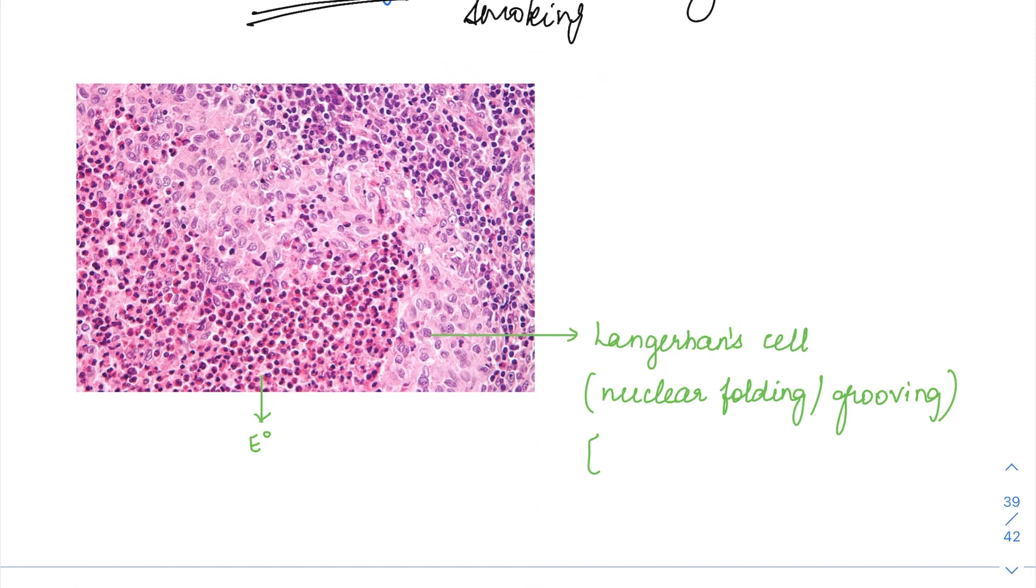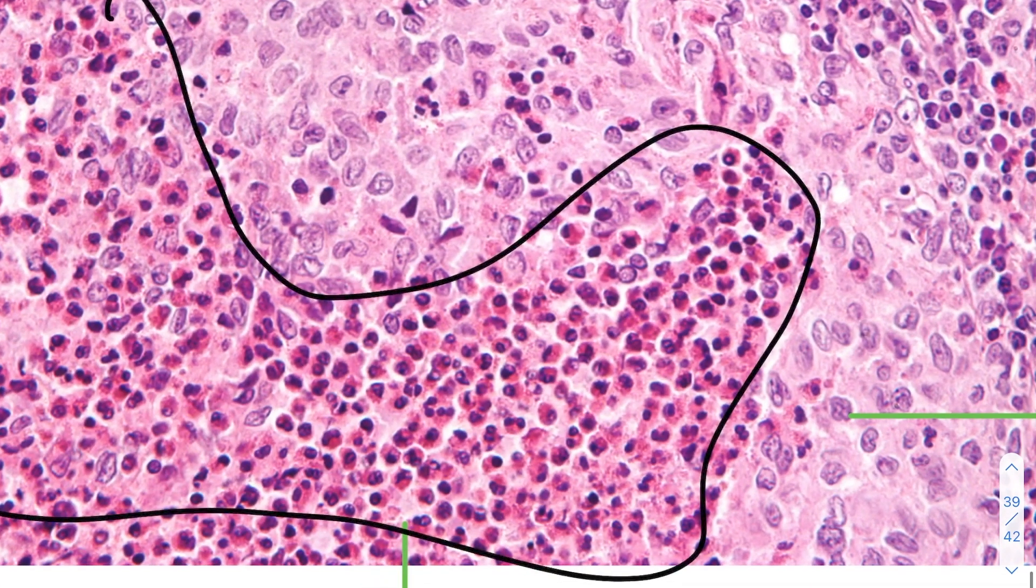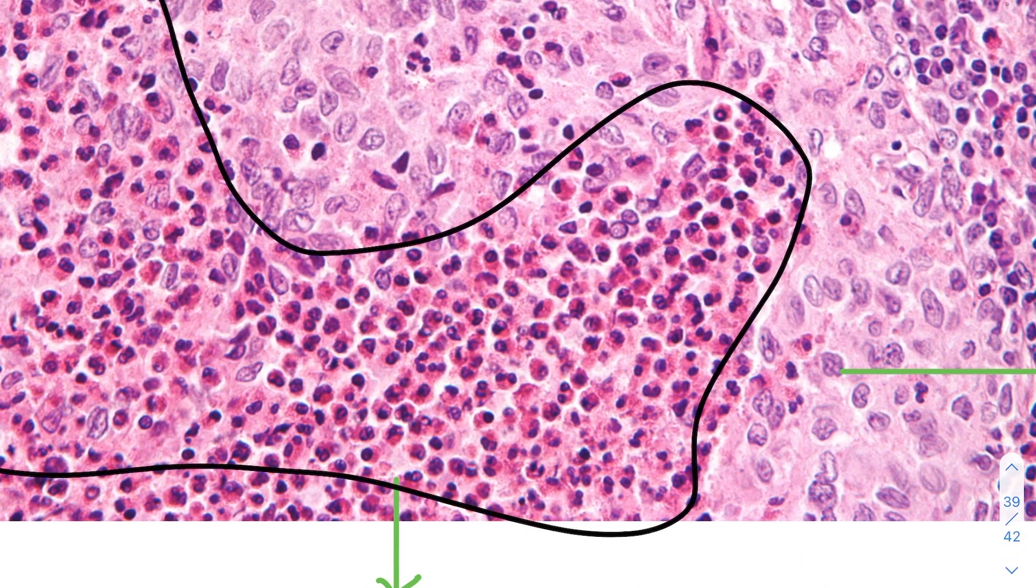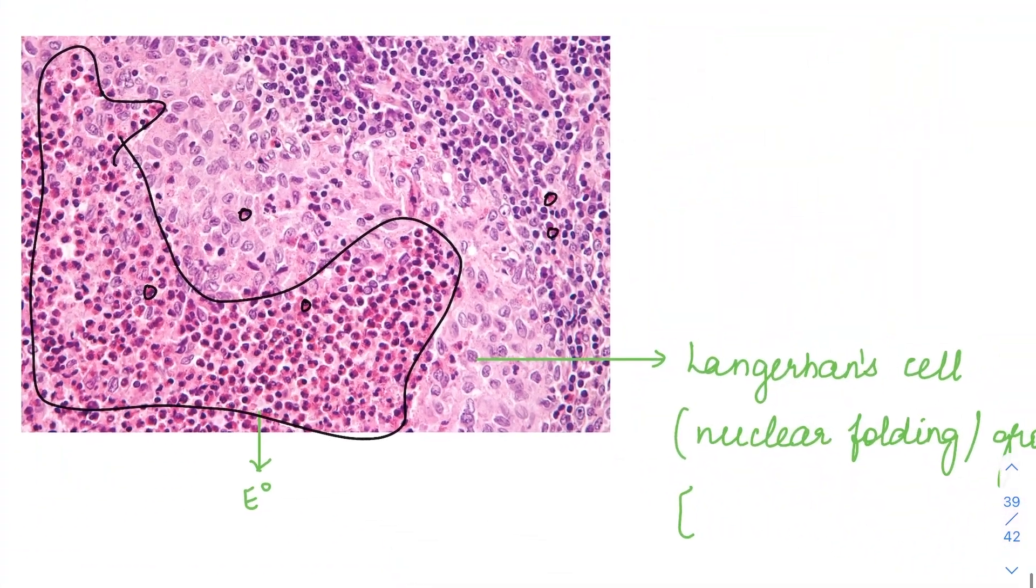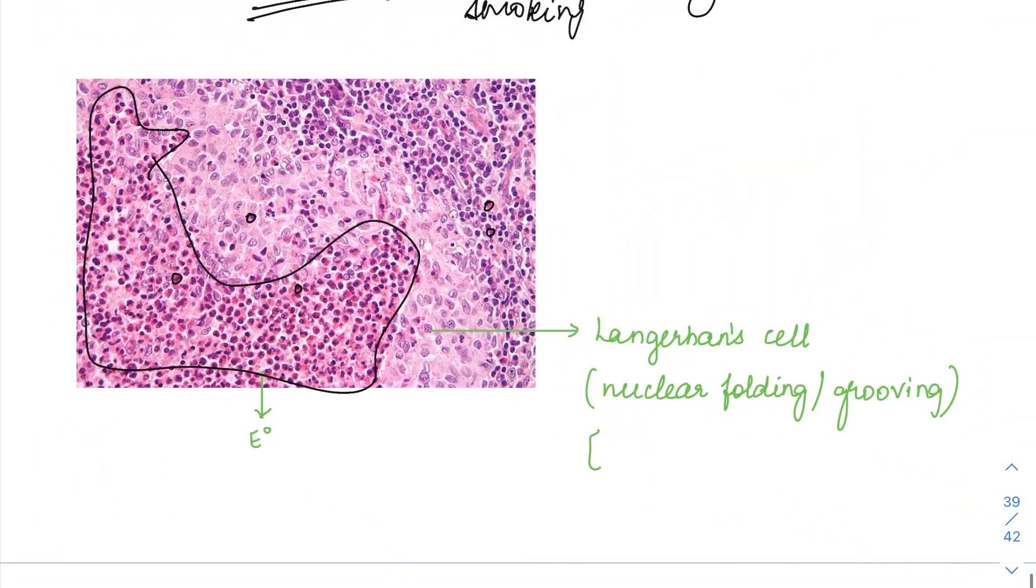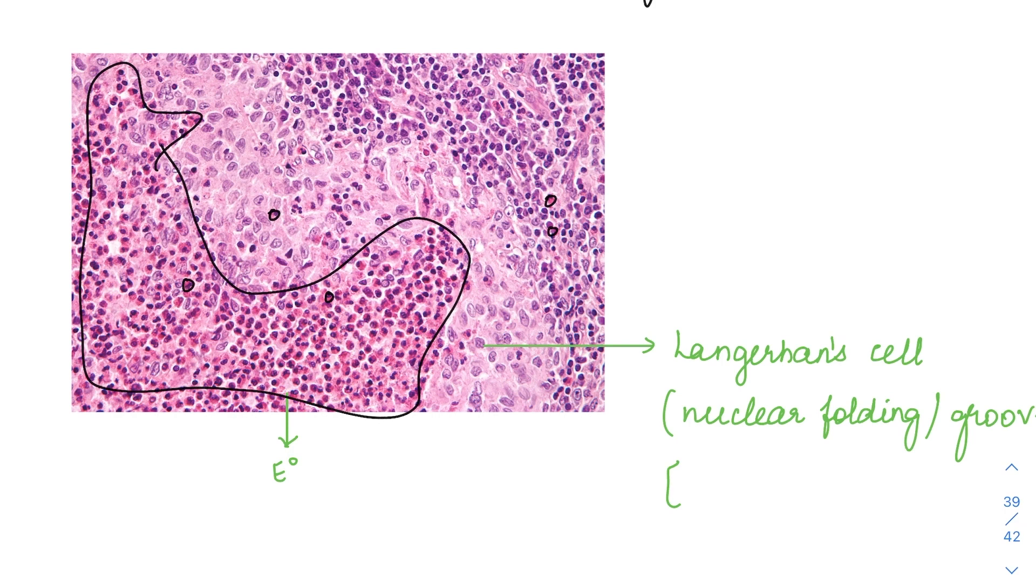Coming to the morphology, here again we have picture-based questions in LCH that is why it is quite important here. In LCH in this image if you see there are lots and lots of these eosinophils. The entire thing here is eosinophils. Look at the color of the cytoplasm in these cells. It is kind of orangish. In between also you are having lots of this eosinophils. Apart from that they are going to have this Langerhans cells.